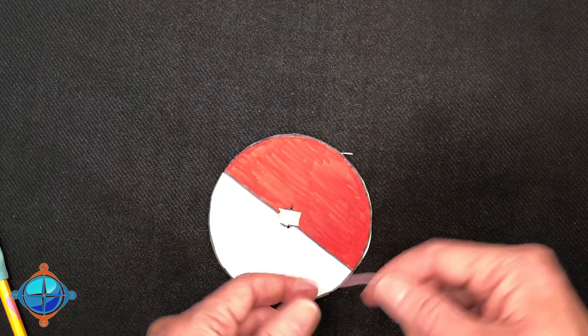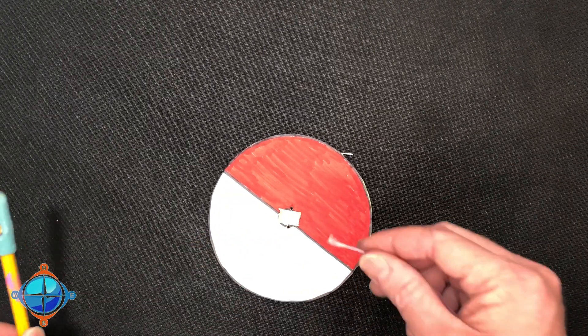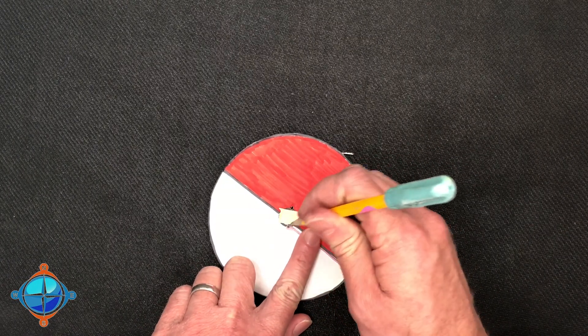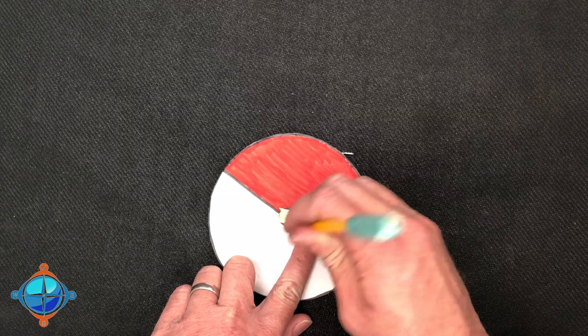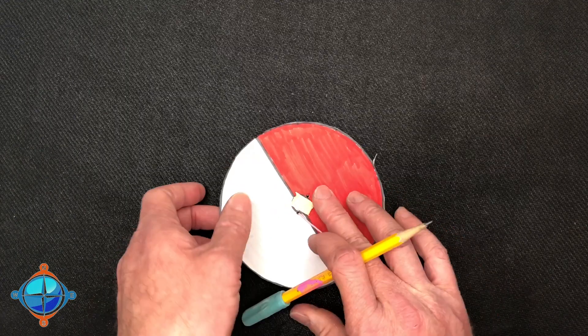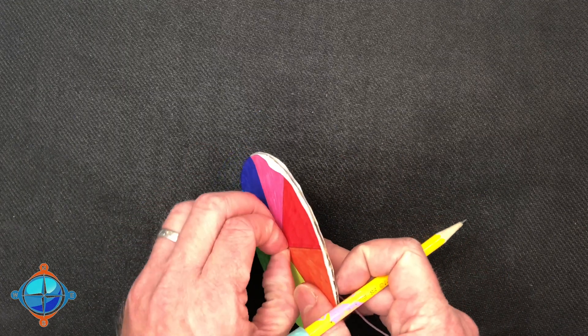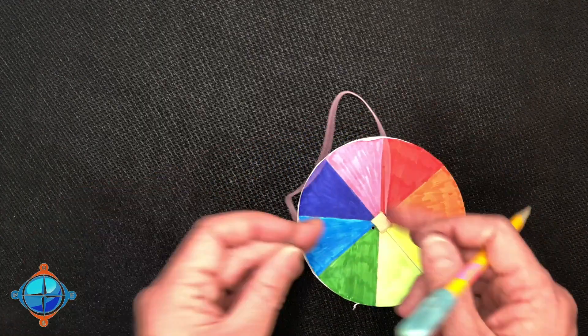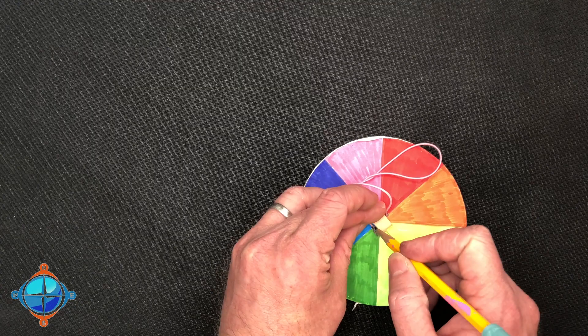Now it's time to put our string through the hole. It might be a little bit difficult to stick through, but your pencil can help you. Just poke it through one side, turn it over, and you should be able to pull it through. Then poke it through again until you've made a full circle.